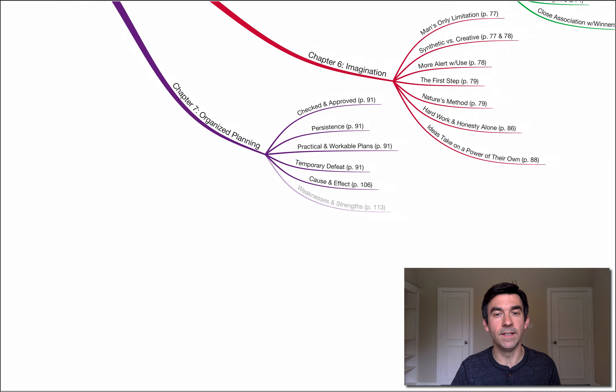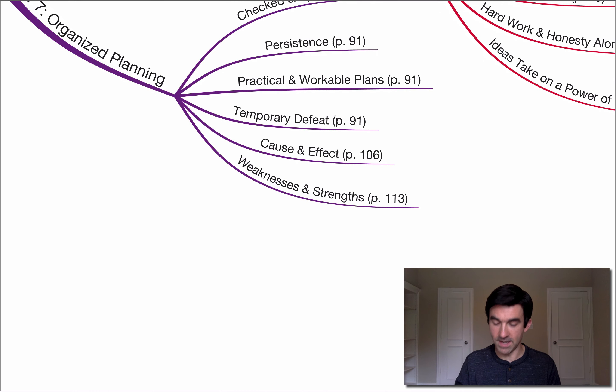Sixth key point here, weaknesses and strengths. I'm on page 113 now. Napoleon says that you should know all of your weaknesses in order that you may either bridge them or eliminate them entirely. You should know your strength in order that you may call attention to it when selling your services. You can know yourself only through accurate analysis.